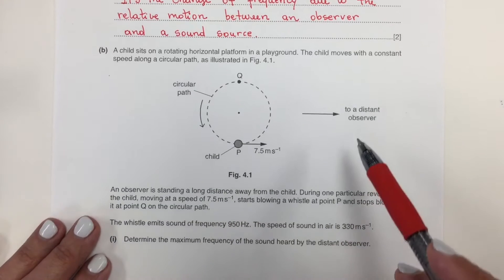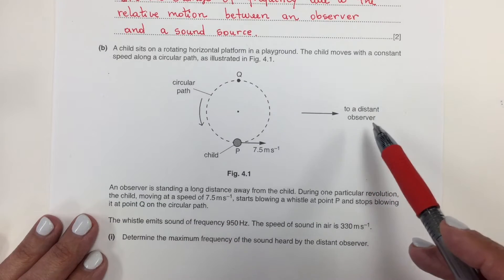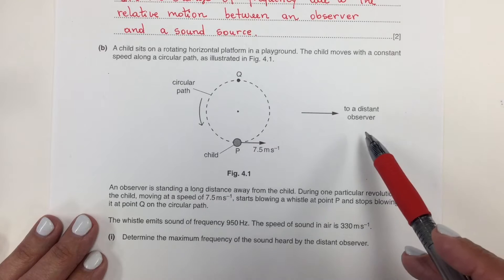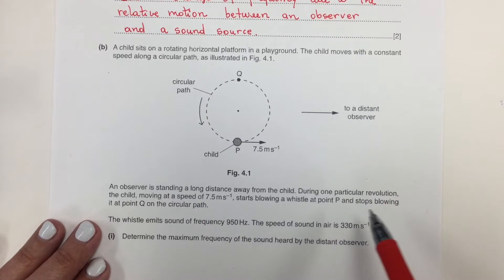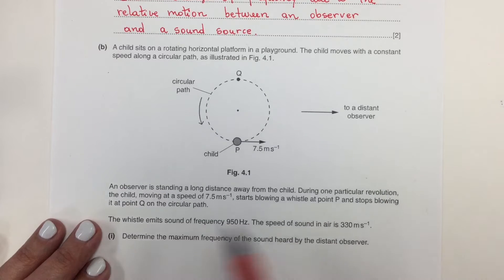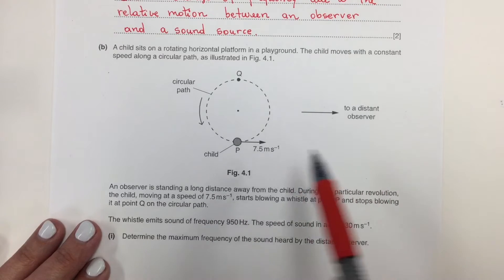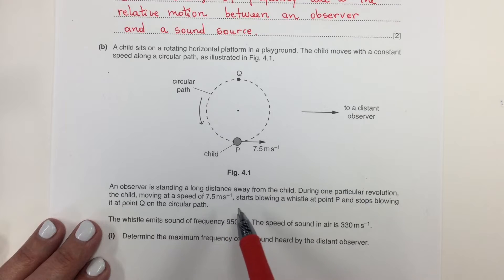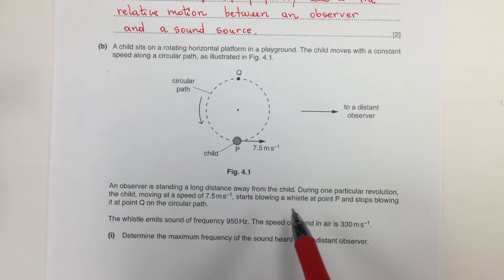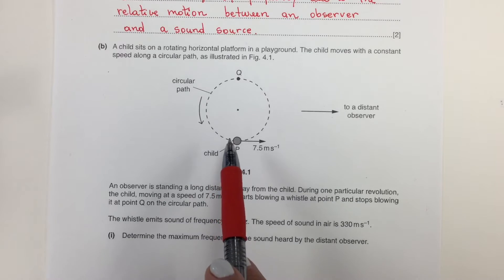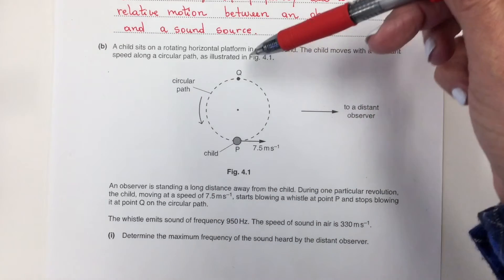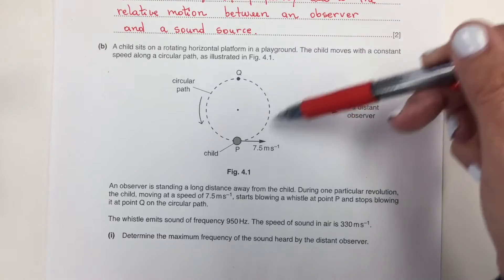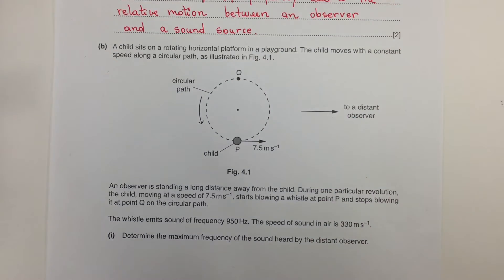An observer is standing a long distance away from the child. During one particular revolution, the child, moving at the speed of 7.5 meters per second, starts blowing a whistle at point P and stops blowing at point Q on the circular path.